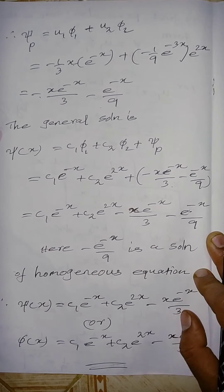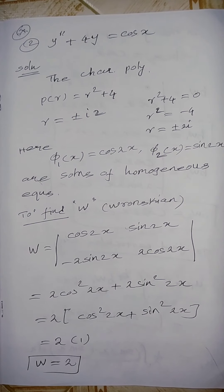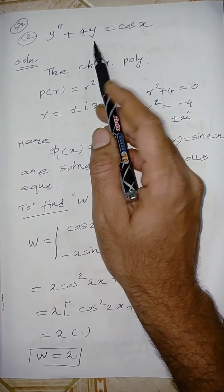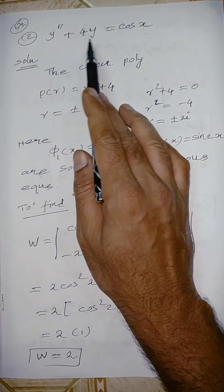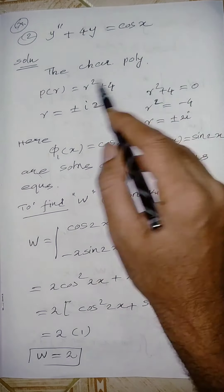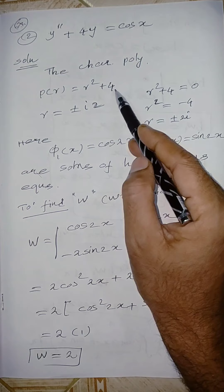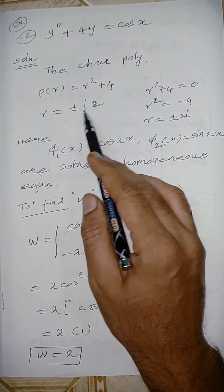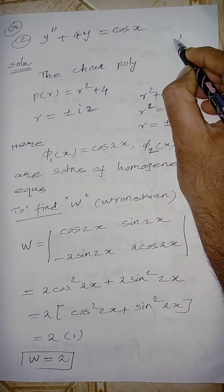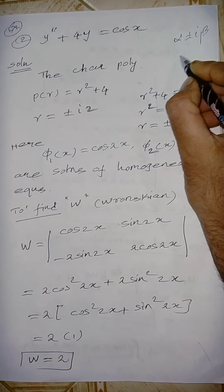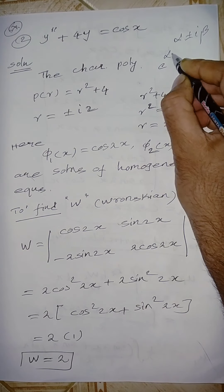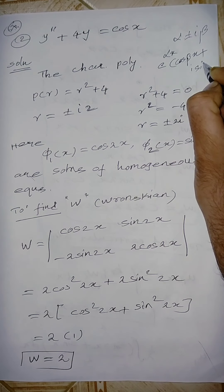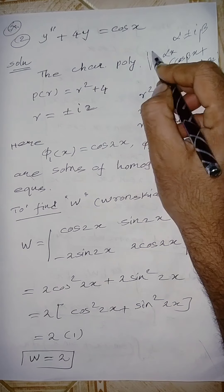The next important problem: find all the solutions of y'' + 4y = cos x. We follow the same method. The characteristic polynomial is p(r) = r² + 4. Setting r² + 4 = 0 gives r = ±2i — complex roots of the form α ± iβ with α = 0, β = 2.